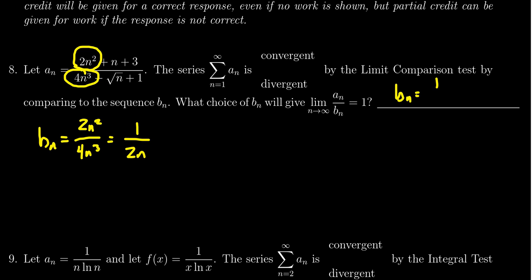So b_n is equal to 1 over 2n. And because of that, we get that the series of a_n will have the same convergence as the series of the b_n.